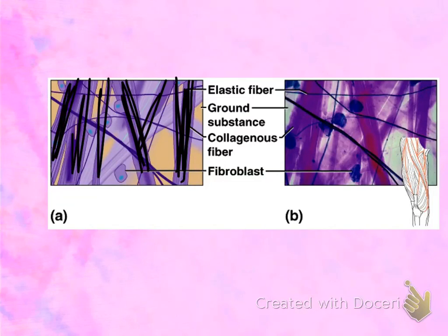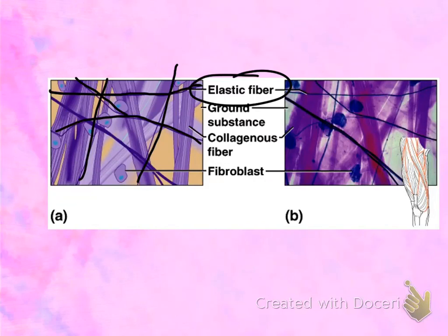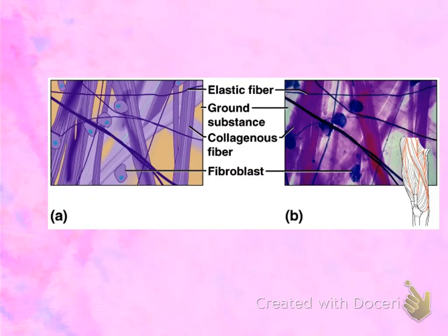All of the thick fibers are your collagen fibers. You can also see the elastic fibers, which are much thinner, branching and running throughout the tissue. Remember that the fibers are not running parallel — they are crisscrossed all over the place. The cream or tan color material in the background is your ground substance. You will also see fibroblasts embedded in the tissue; fibroblasts are responsible for making the collagen and elastic fibers.